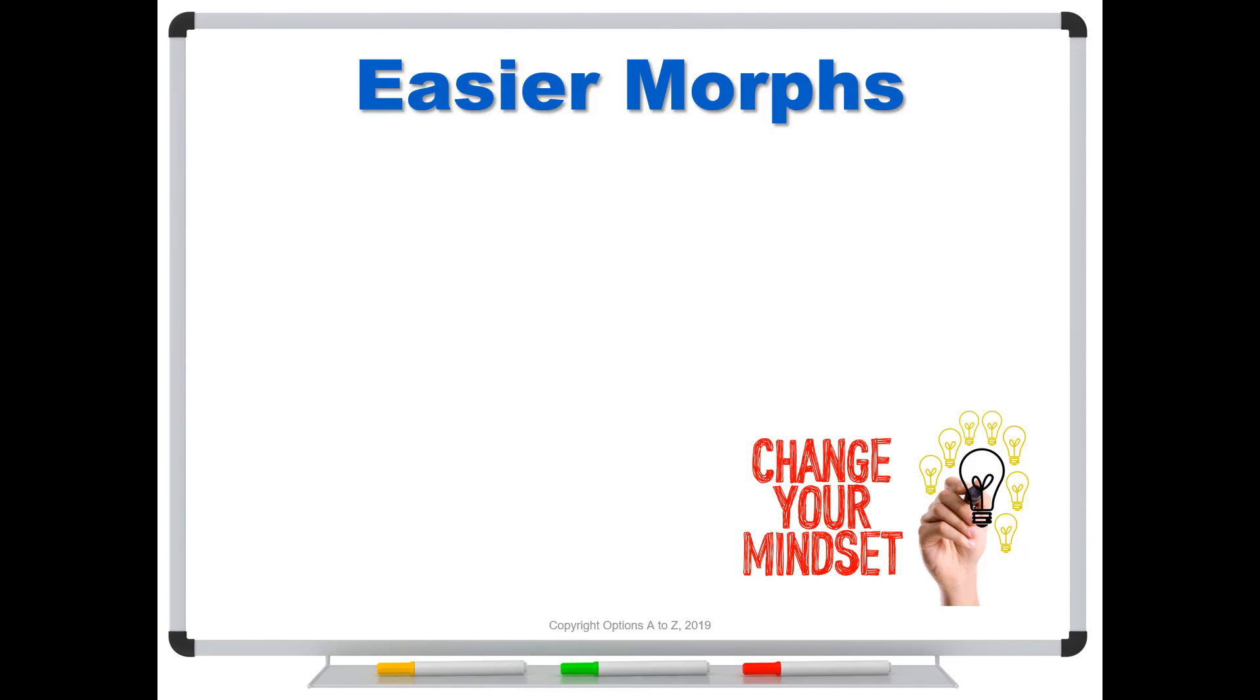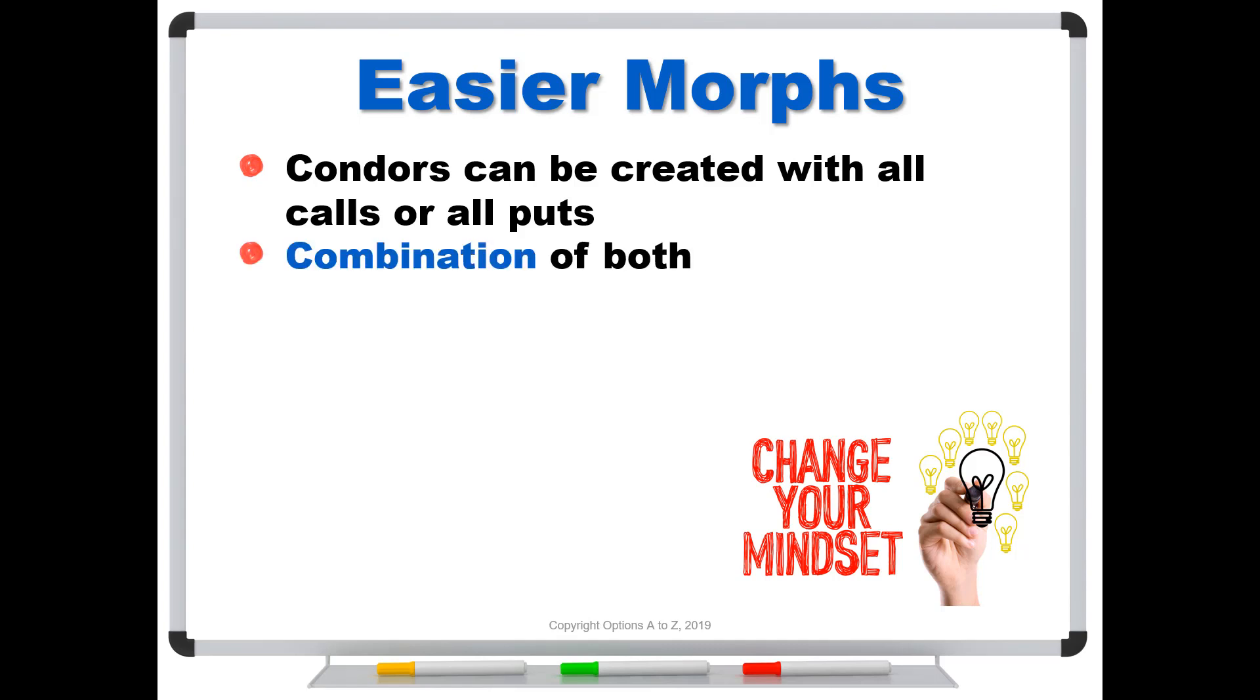So not only should you think about morphs, but you also want to consider what are the easier morphs. To give you an example, I'm going to talk about condors and specifically the short iron condor. Condors can be created with all calls or all puts, but you can also create them with a combination of both. These are what are called iron versions. So if you ever hear of an iron butterfly, not the band, but the option strategy, or an iron condor, it means that it's constructed with calls and puts.